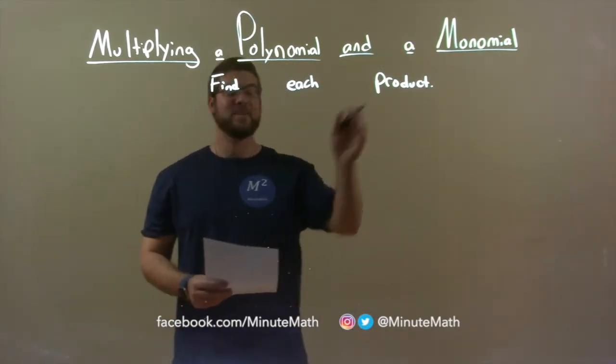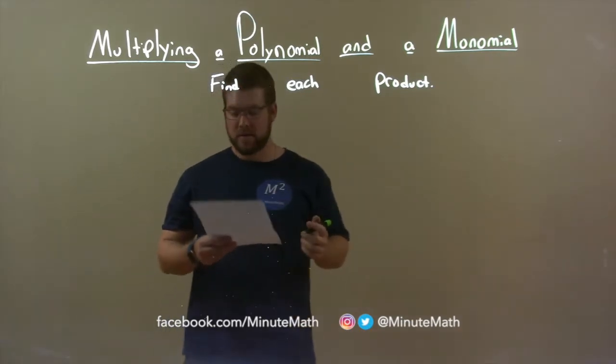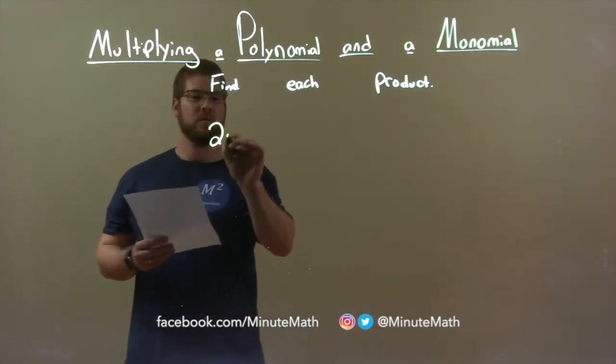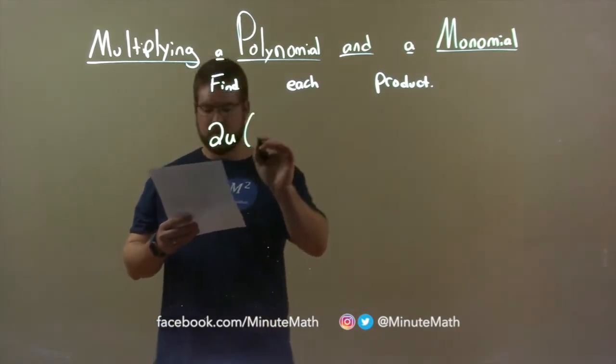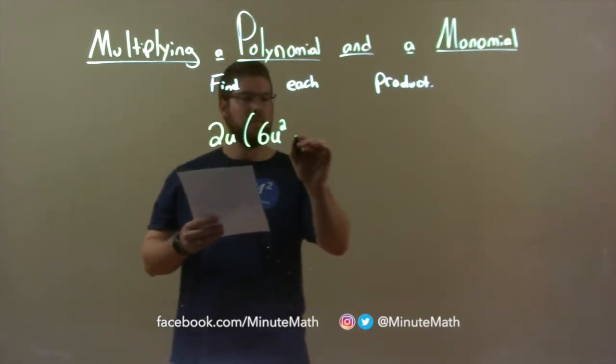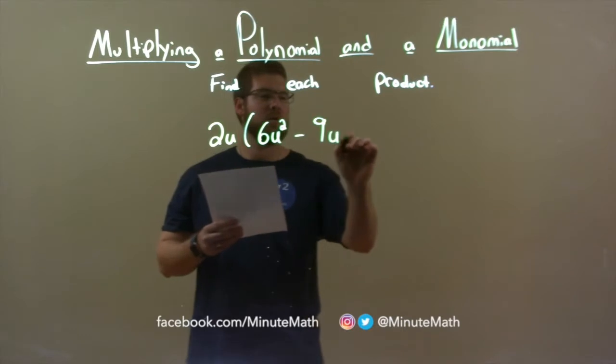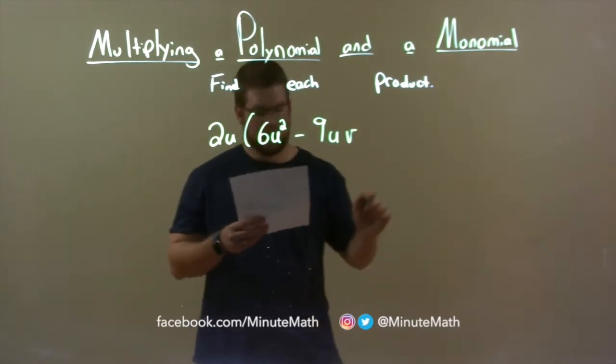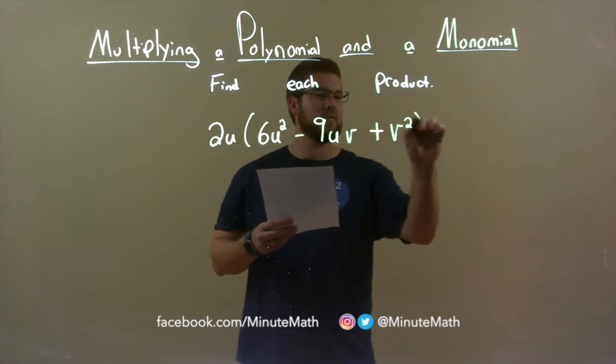We're finding each product. So if I was given this product: 2u times 6u squared minus 9uv plus v squared.